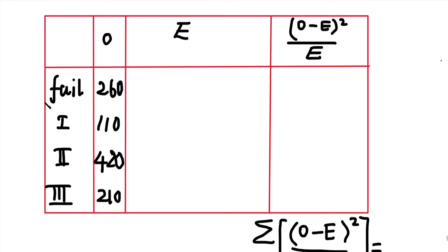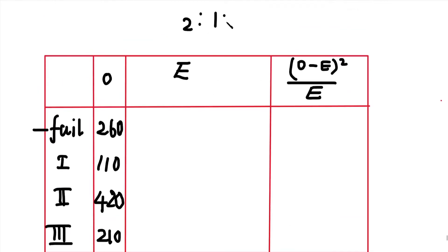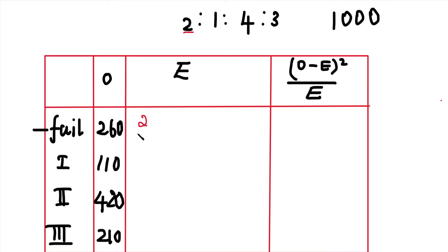The 4 observed frequencies are: Fail = 260, First class = 110, Second class = 420, Third class = 210. The ratio is 2:1:4:3, with total ratio = 10 and total students = 1000. First expected frequency = (2/10) × 1000 = 200. Second expected frequency = (1/10) × 1000 = 100.